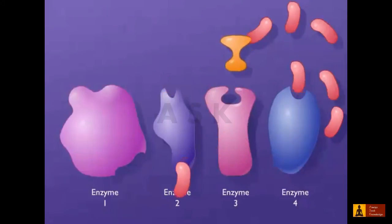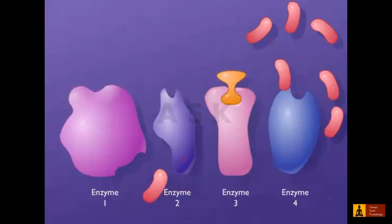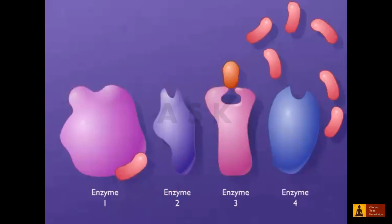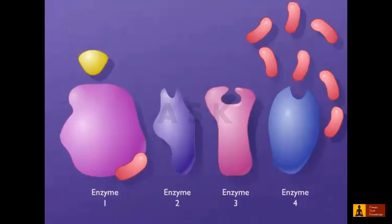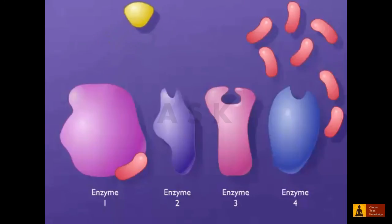When the product binds to the allosteric site, the enzyme undergoes a conformational change and can no longer react with its substrate. There is no substrate for subsequent steps in the pathway, and the final product is no longer synthesized.